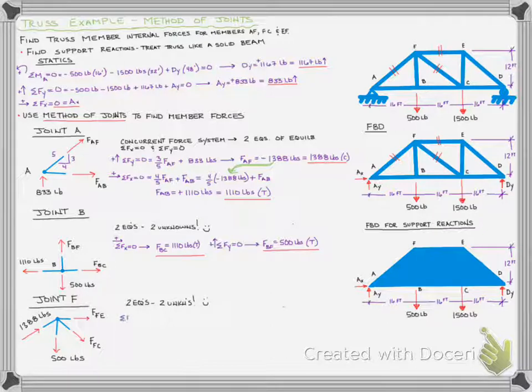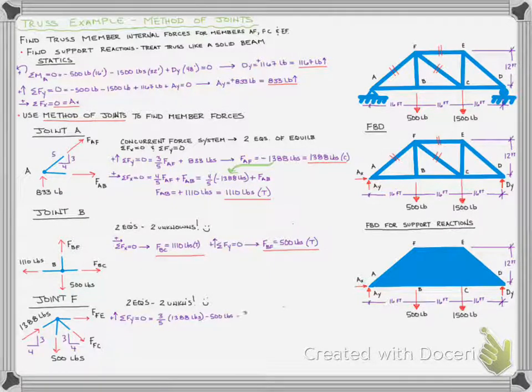We can solve this. Let's start by summing forces in the Y, so we only have to deal with member force FC. Our Y component of the 1388 is three-fifths. That's going to be positive because we're defining up as positive, and in this case, pushing on the joint is positive. We have minus 500 pounds and then minus three-fifths of force FC. And that's going to lead us to force FC is 555 pounds in tension.